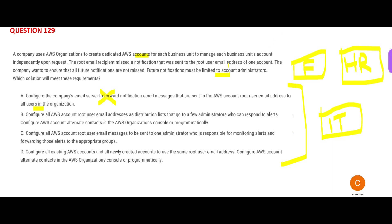Option B looks logical. It says to treat the email addresses as a distribution list, limit recipients to a few administrators — which is what the question requires — and configure alternate contacts using the AWS Organizations console or programmatically. These administrators would be accountable for responding to the alerts. This approach is correct.